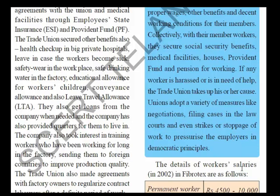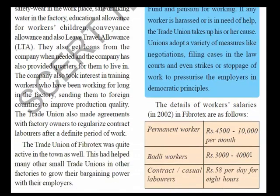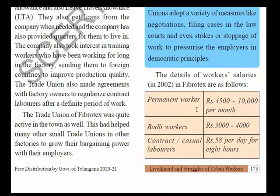Now the details of workers' salaries in 2015 at Fibrotex company are as follows. Permanent workers get rupees 4,500 to 10,000 per month. Budli workers get only rupees 3,000 to 4,000 per month. Contract or casual laborers get rupees 58 per day for 8 hours of work. So we see three types of workers in this Fibrotex company: permanent workers who get regular salaries, Budli workers who are casual contract workers, and daily contract or casual laborers.